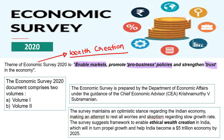Economic Survey 2020 is a document comprising two volumes — Volume 1 and Volume 2. The economic survey is prepared by the Department of Economic Affairs, under the guidance of the Chief Economic Advisor, who is currently Krishnamurti V. Subramaniam.